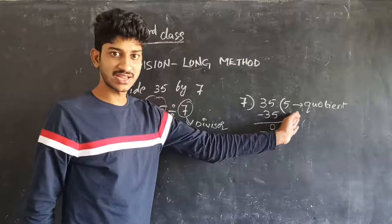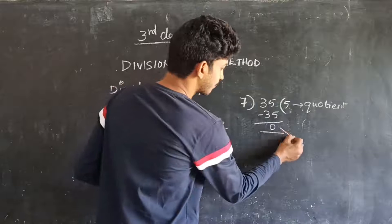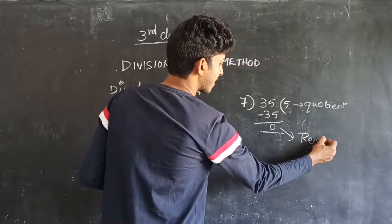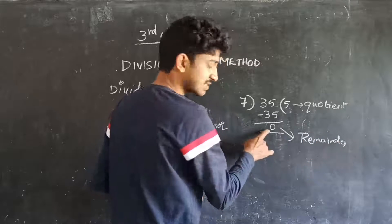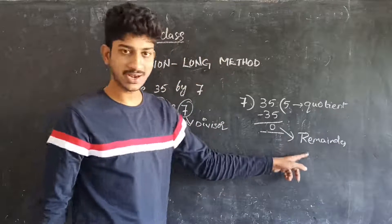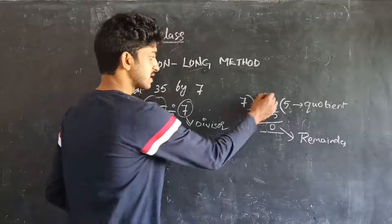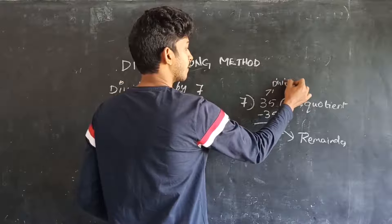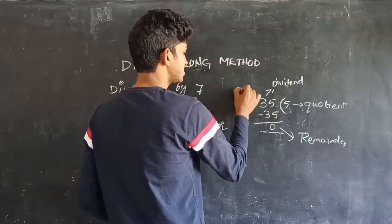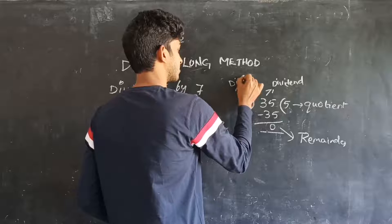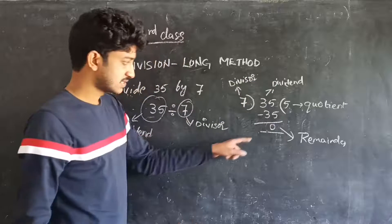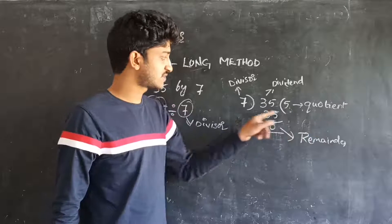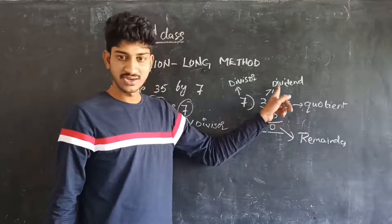The answer written on the right side of the dividend is called the remainder. See here — this is the dividend and this is the divisor. Remember these things: this answer is called the remainder, this is called the quotient, this is called the divisor, and this is called the dividend.